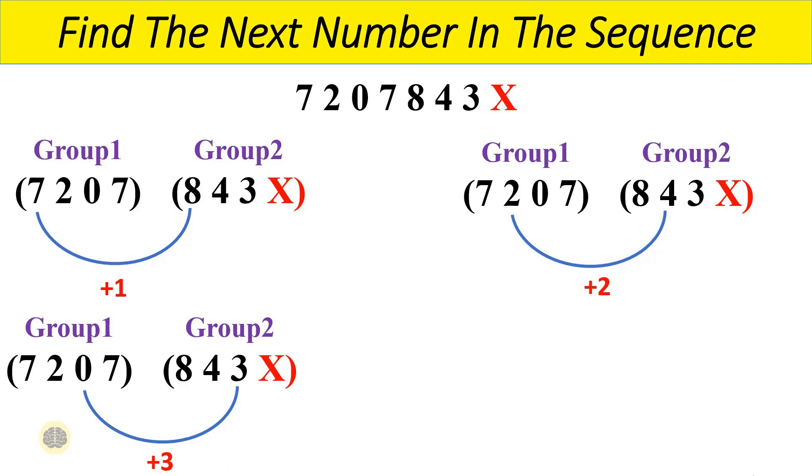So finally with this logic, consider the fourth digit of the first group and add 4 to it, which will result in 11, which is the fourth digit in the second group. We know that here the fourth digit of the first group is 7, after adding 4 to it the result will be 11, which is the fourth digit in the second group. Thus the answer to this particular puzzle is 11.